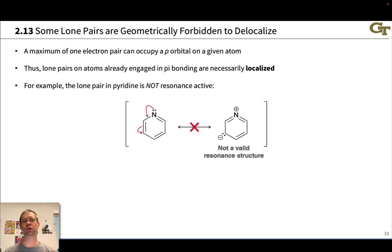In thinking about whether a lone pair is involved in resonance or not, we need to keep in mind that a p orbital can only hold a maximum of two electrons or one electron pair. And so when an atom is engaged in resonance, it can be engaged in resonance in really three ways, two of which involve an occupied p orbital and one of which involves an empty p orbital, but we can never engage more than one lone pair at an atom in resonance or in pi bonding more broadly.